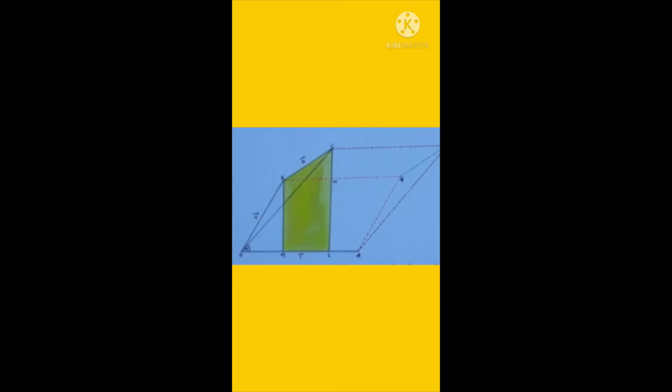Then mod of c vector cross (a vector plus b vector) is equal to mod of c vector into (a vector plus b vector) into sin alpha, which is equal to the area of parallelogram OAPC. Then mod of c vector cross a vector is equal to the area of parallelogram OAQB. Mod of c vector cross b vector is equal to the area of parallelogram BQPC.